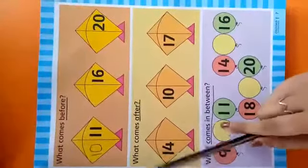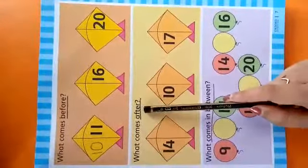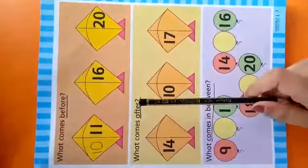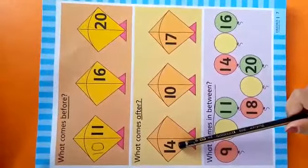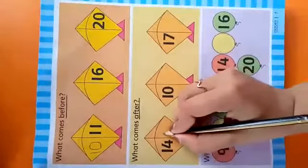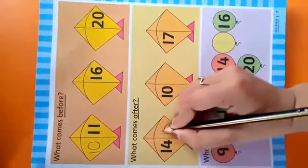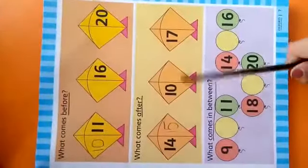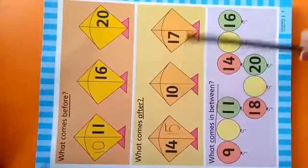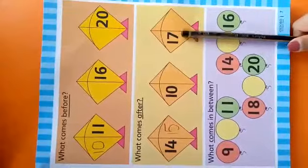Now look at what comes after. Tell me what comes after fourteen. It is fifteen. One, five, fifteen. Now you have to write what comes after ten and seventeen.